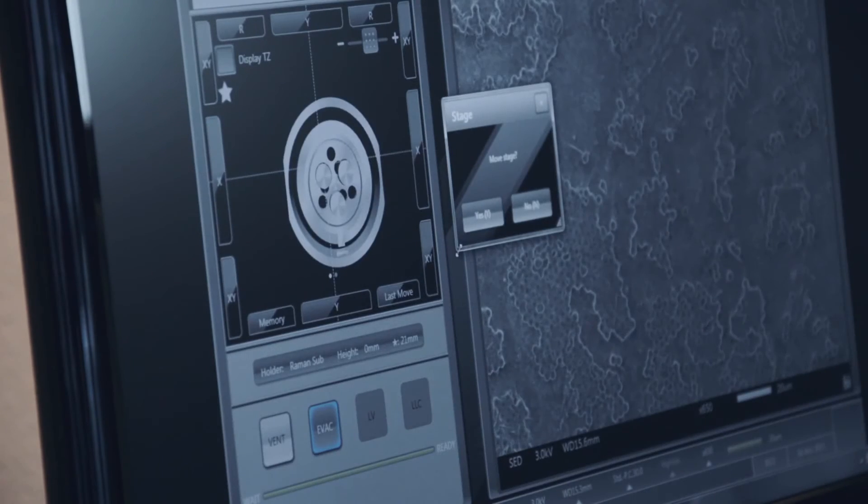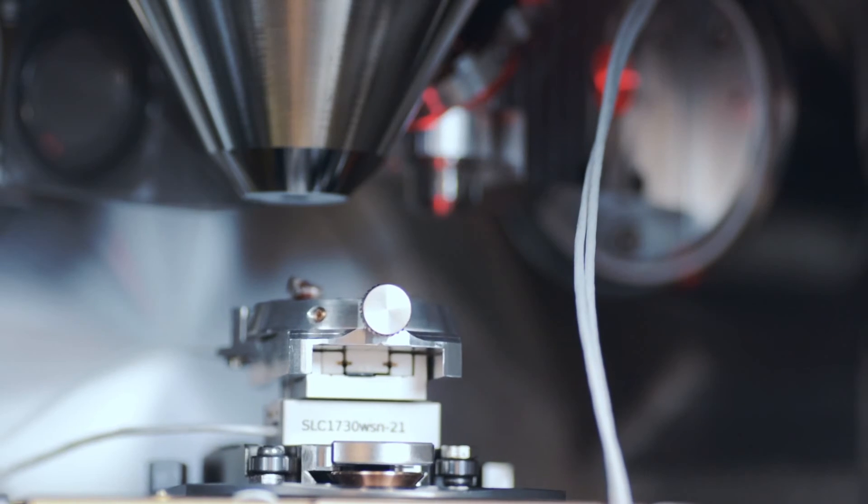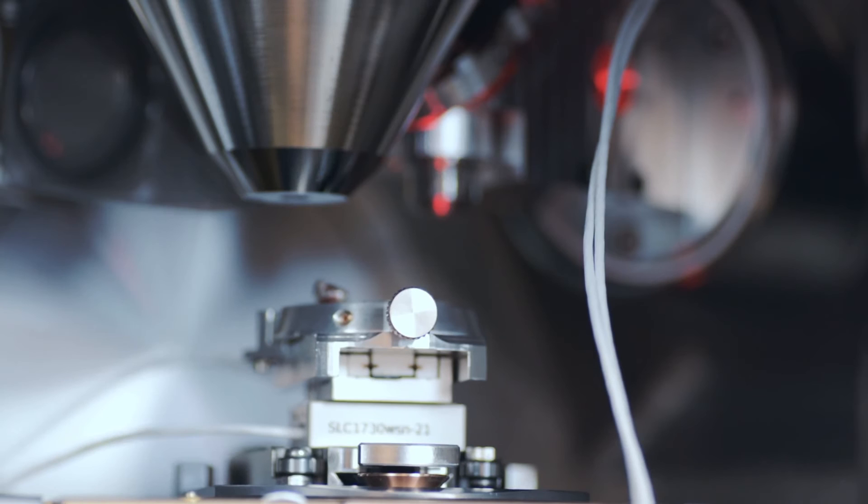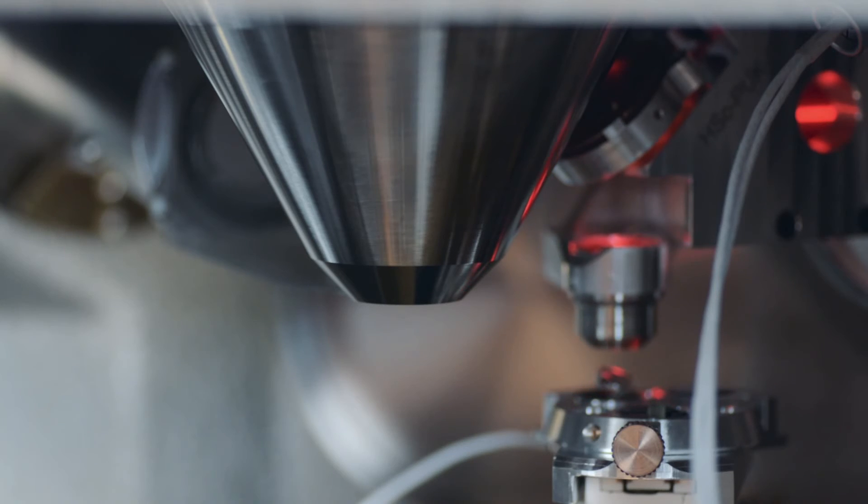The sample is displaced with the main stage from the scanning electron microscope to the Raman spectrometer position. The Raman objective is, manually or automatically, adjusted in height to obtain an optimal focus and efficient Raman light collection.